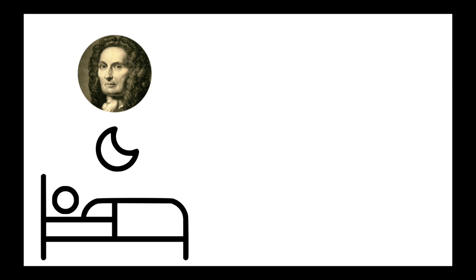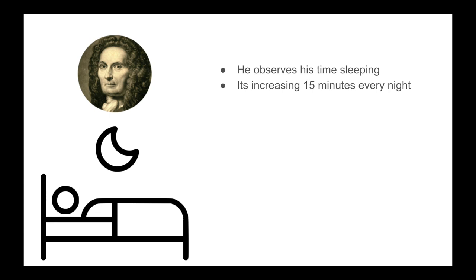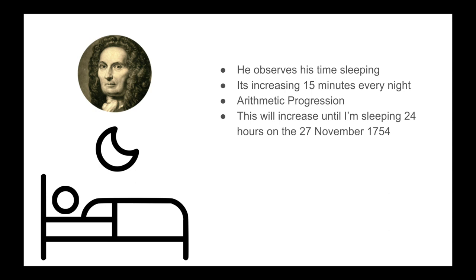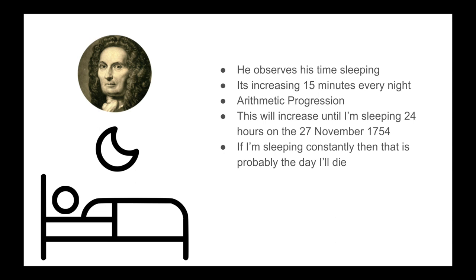Now let's end with the myth — the actuary who predicted his own death. Abraham de Moivre observed the time he spent sleeping and noticed it was increasing by 15 minutes every single night. Using an arithmetic progression, he realized this would increase until he was sleeping 24 hours on the 27th of November 1754. He thought if he was going to be sleeping constantly, that was probably the day he would die — and he was right.